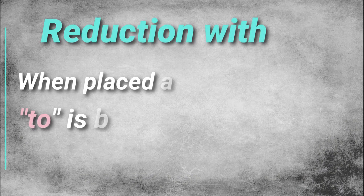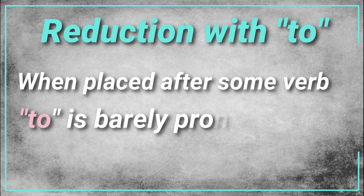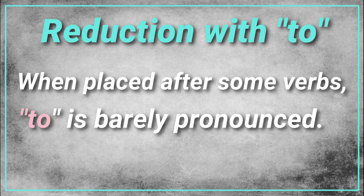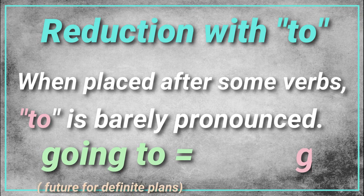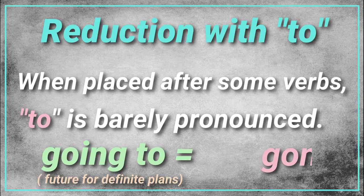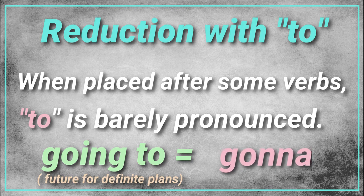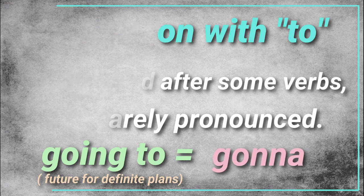Another example of reduction is when the word "to" is placed after a verb like "going" — it is barely pronounced. So, if we have "going to," for example, which indicates the future, that something is most likely gonna happen. So, rather than having "going to," it will sound like "gonna."